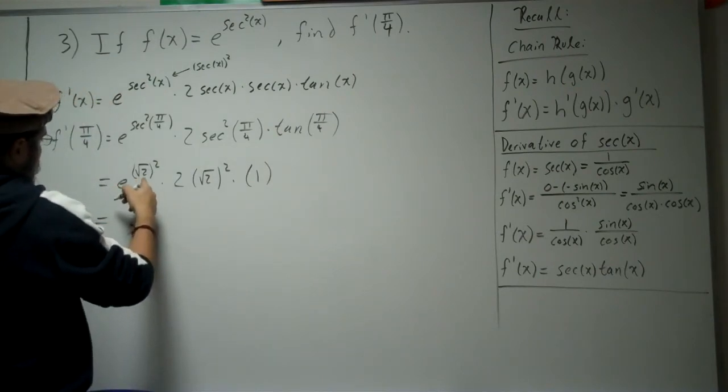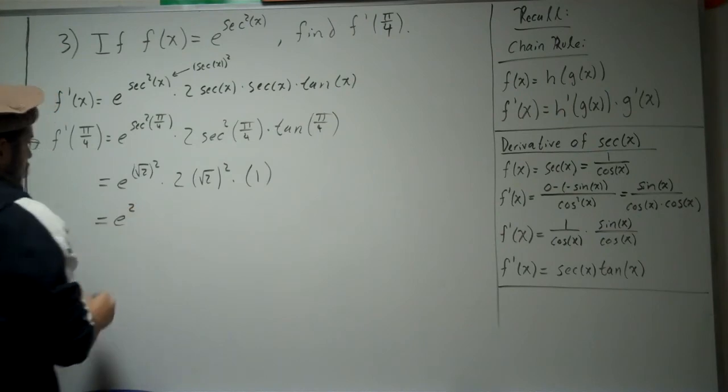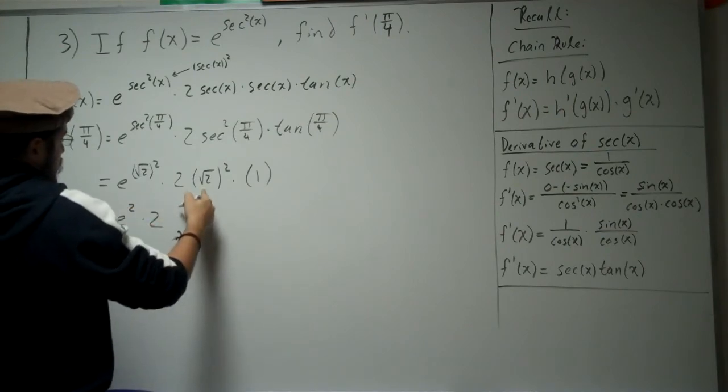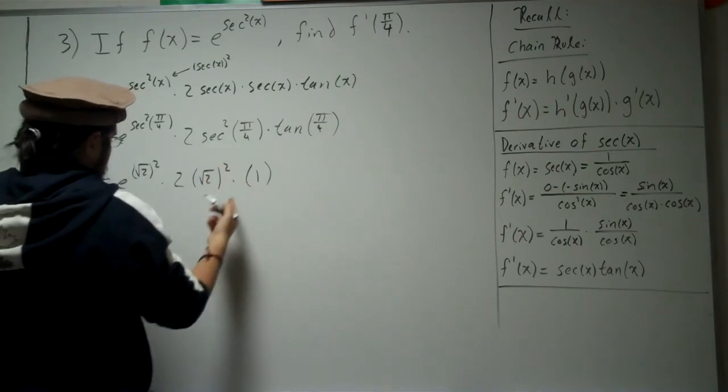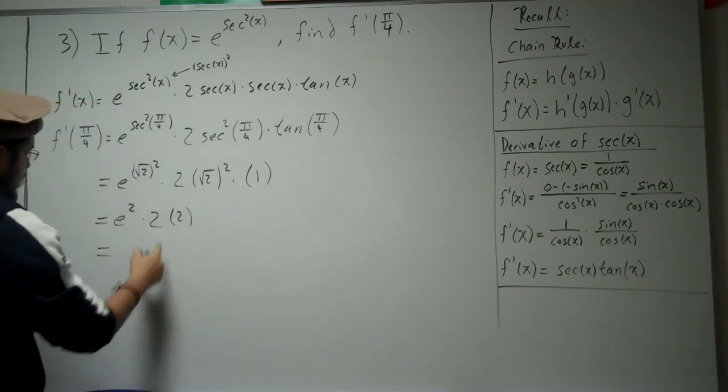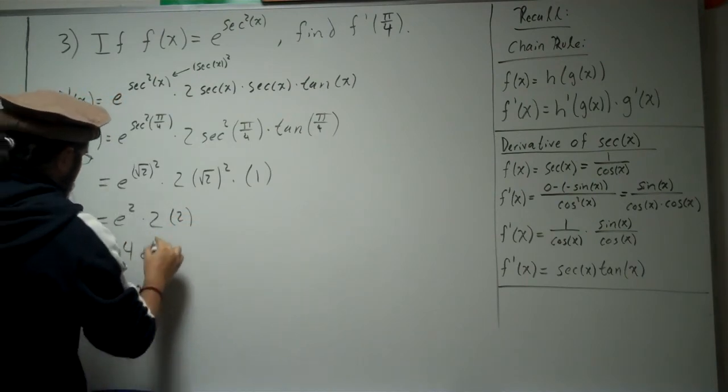So, square root of 2 squared, that's just 2. So that's e squared. Times 2. Square root of 2 squared, that's just 2. So that's another times 2. So what do we get? 2 times 2 is 4. And that's 4 e squared.